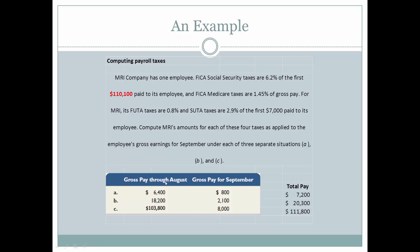We have gross pay through August and then gross pay for September. We'll need to add these together to see if any of these thresholds are going to affect the gross pay for September. The total pay through September is $7,200 for Scenario A, $20,300 for Scenario B, and $111,800 for Scenario C.